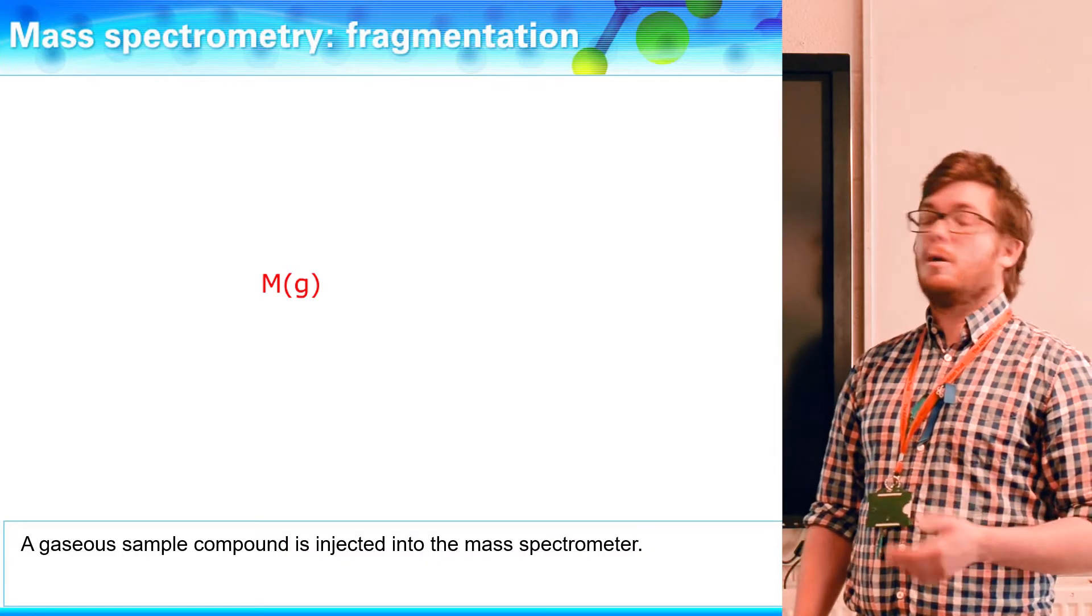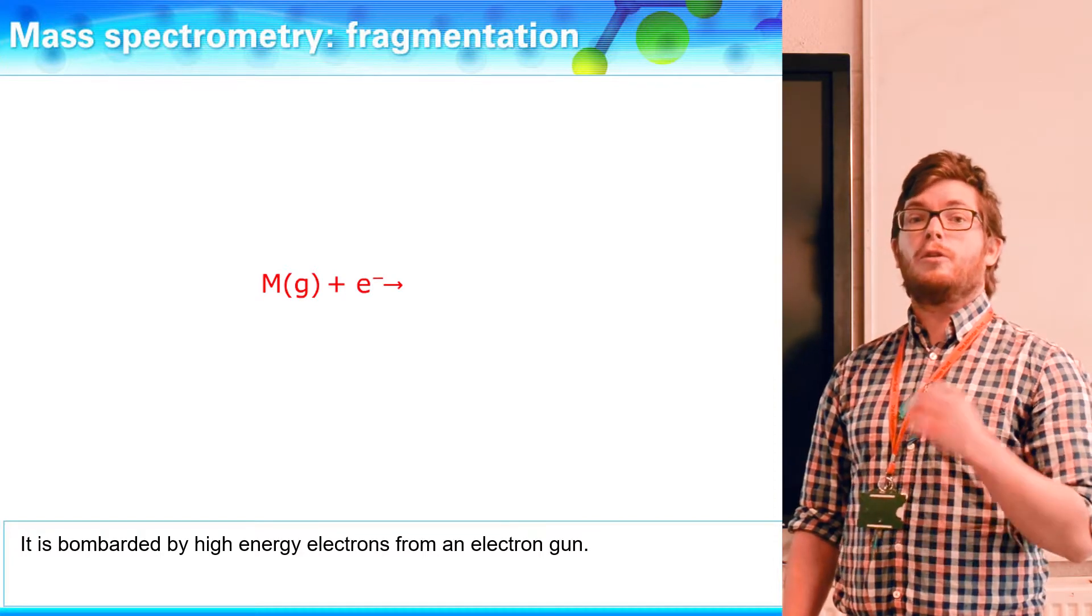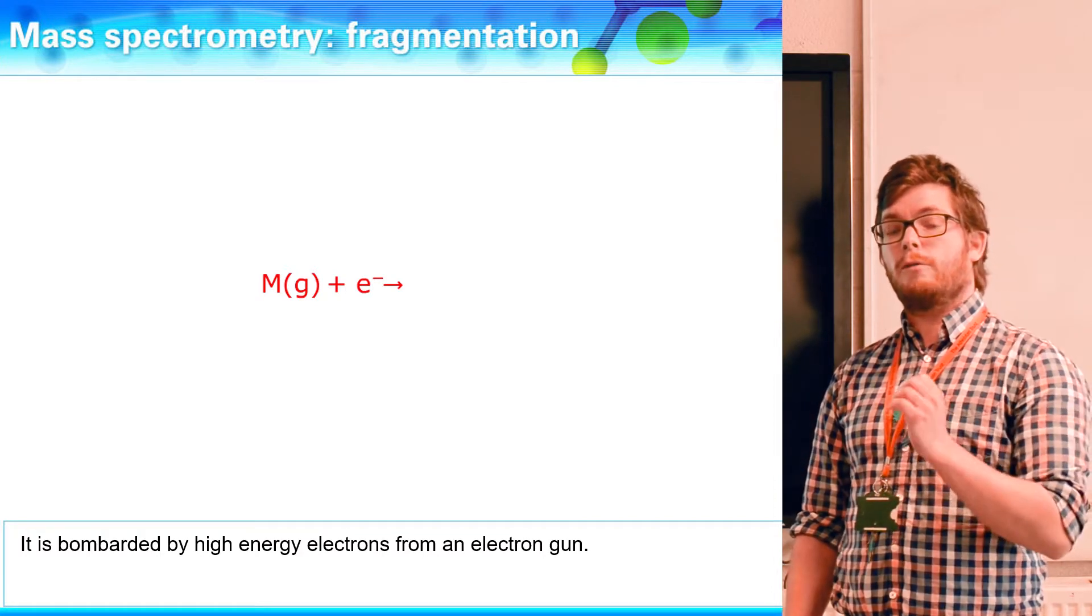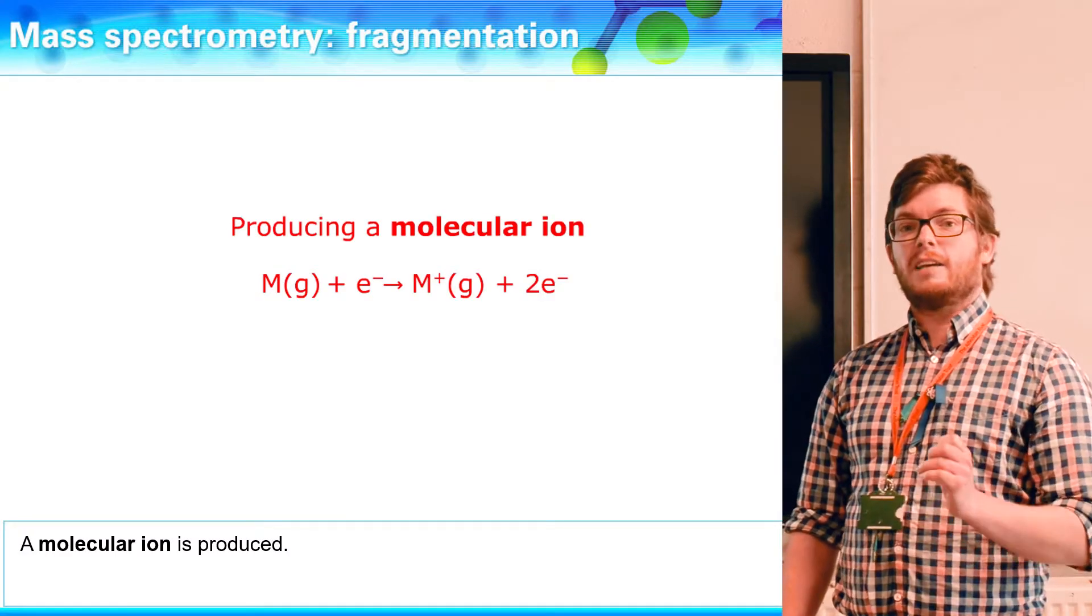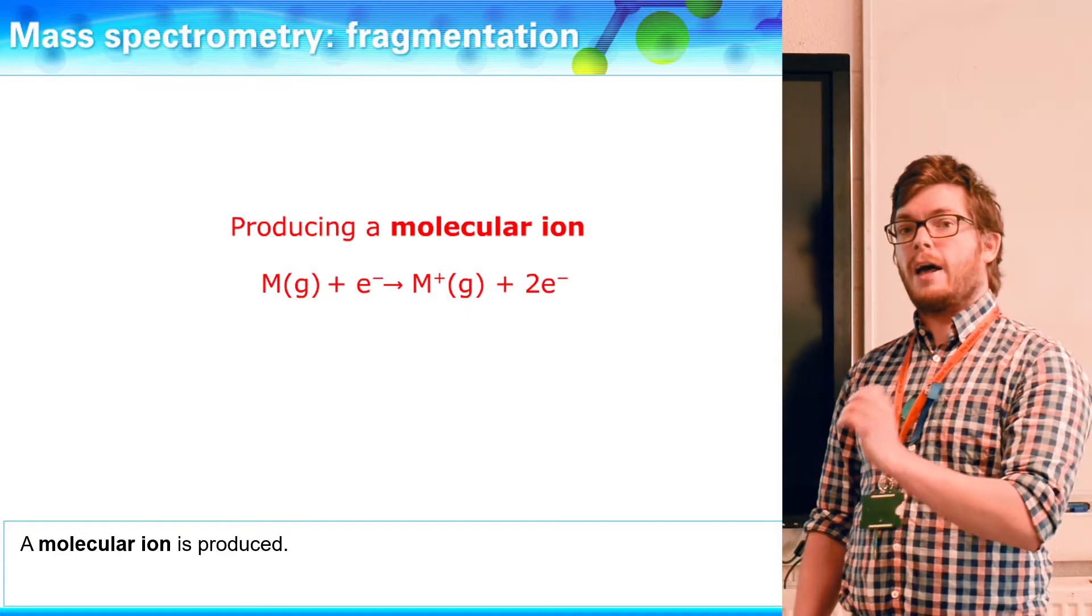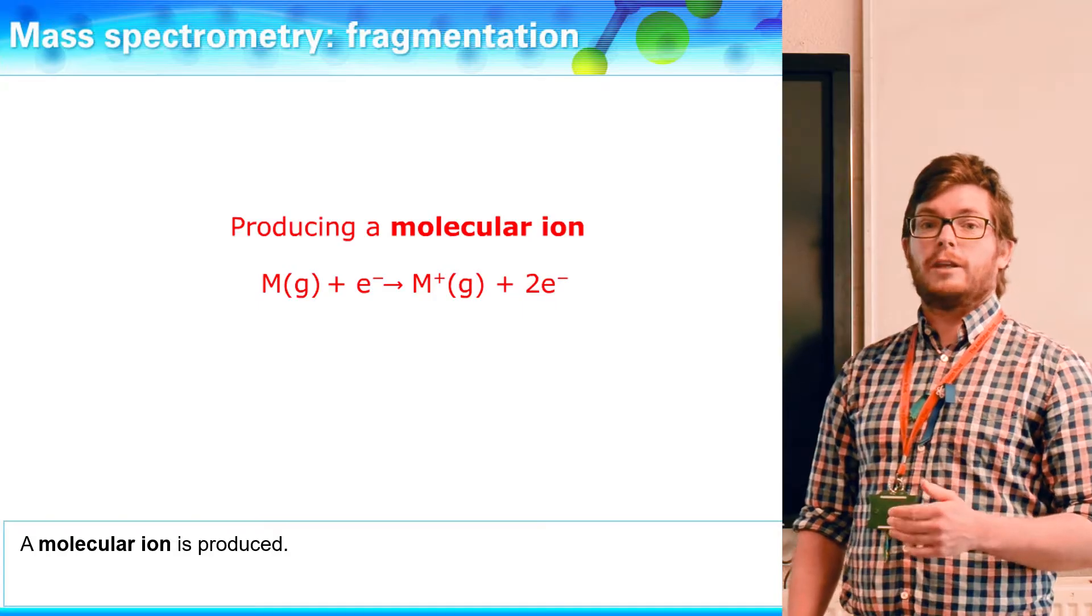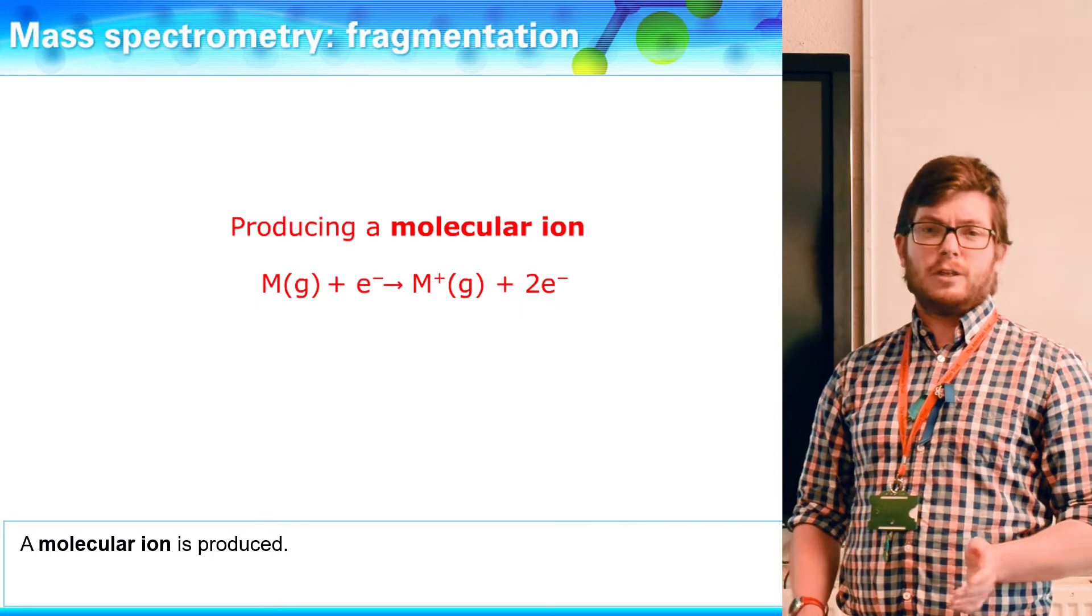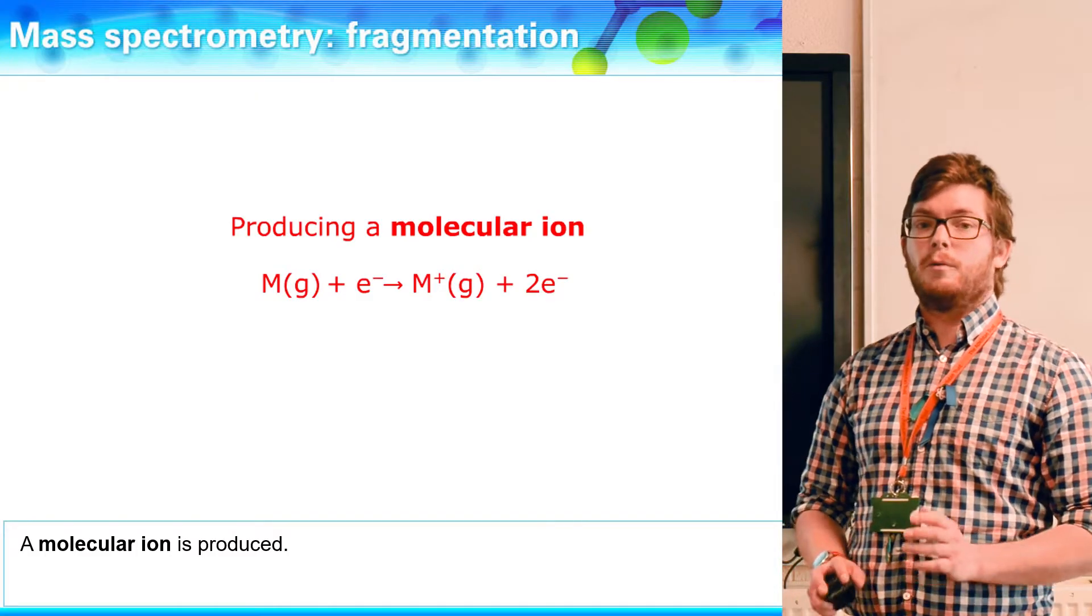Once it's vaporized, we then need to bombard it with electrons. We bombard it with electrons because we want to knock one of its electrons off. We want to turn it into a positive ion. Once it's a positive ion, it can be fired into the mass spectrometer. It'll travel through there and be detected at the far end. We do the detection based on the time of flight, but that's not anything you need to know for the exam.